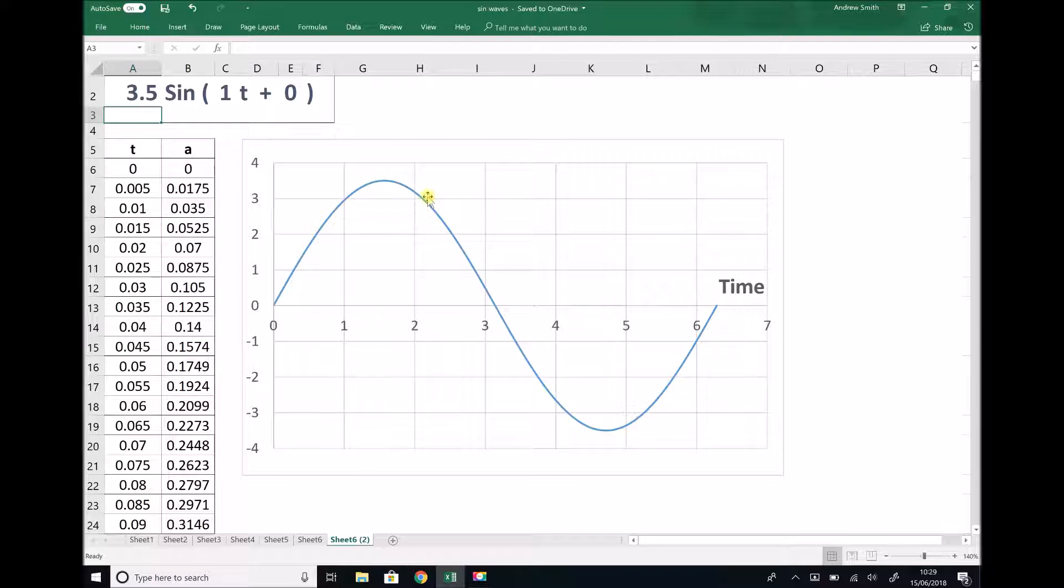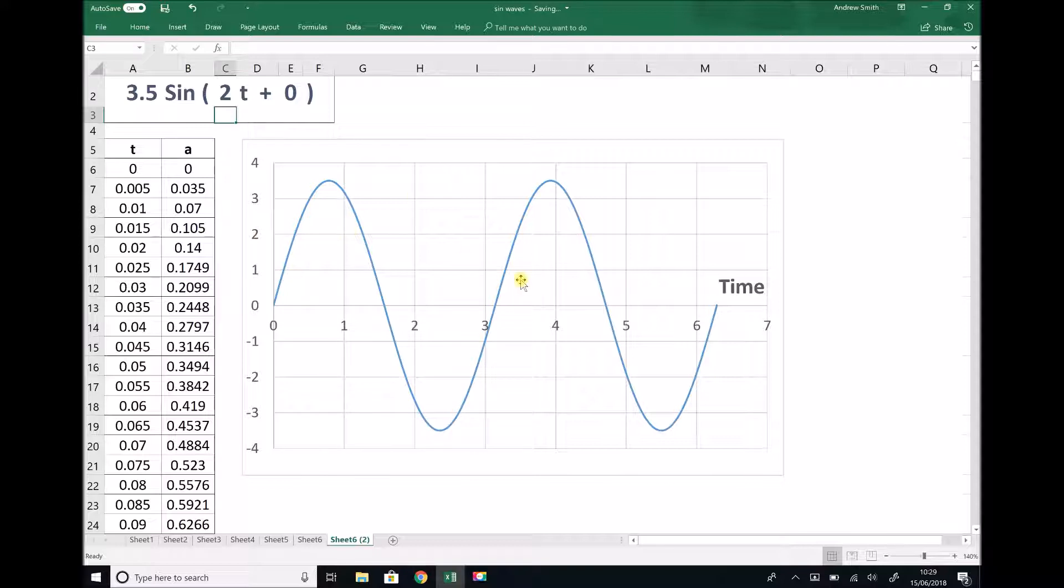The other thing we talked about is how we can increase or decrease the number of waves in a given time period. So here we have a time period of 2π seconds. If we change the number in front of the t here, let's change it to a 2 for simplicity. Then what we notice in the same time period is we now have two full waves. So in effect we've doubled the frequency, we've doubled the number of waves per second.